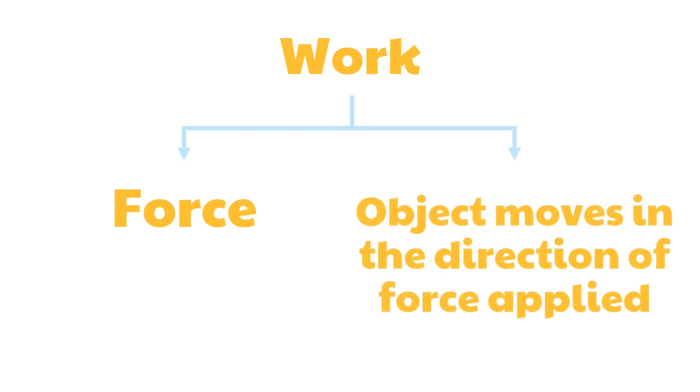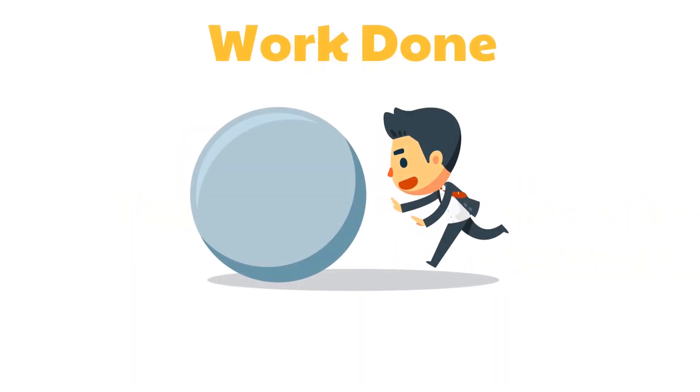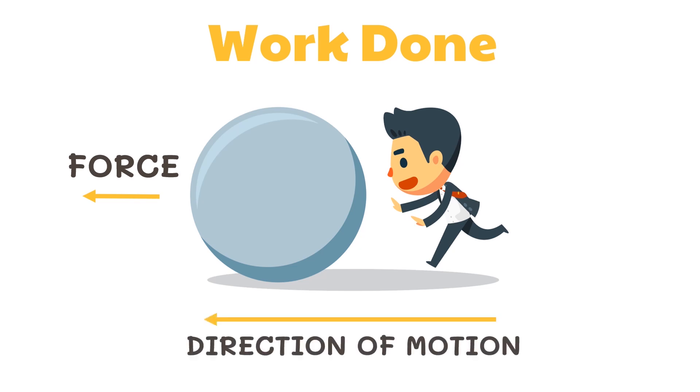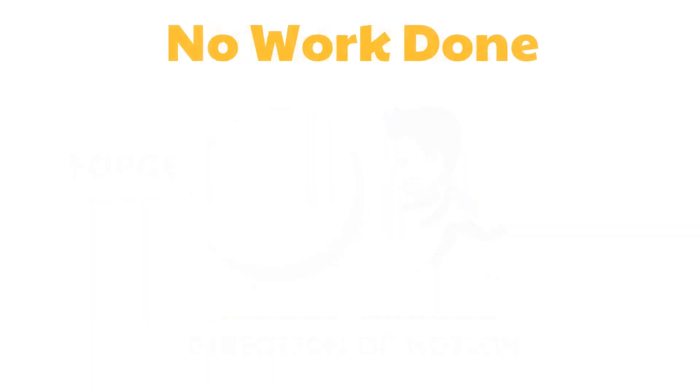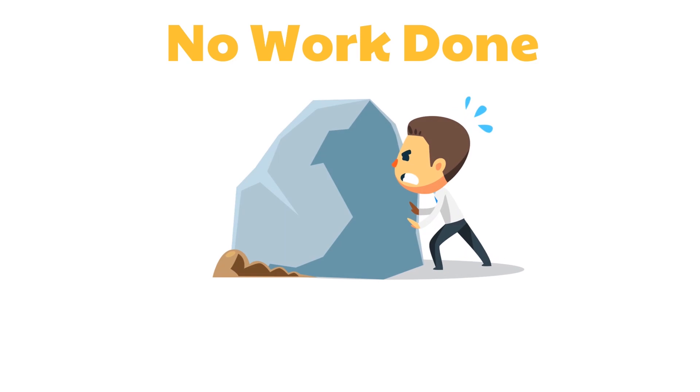In order to say that work is done on an object, there must be force applied to it and the object moves in the direction of the force applied. Work is done if the object you push moves a distance in the direction towards which you are pushing it.